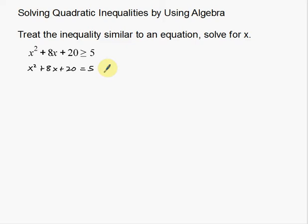Now I want to solve this like any normal equation. When solving quadratic equations, I want to get everything set equal to 0. So I subtract 5 over to get x squared plus 8x plus 15 equals 0. You always want everything on one side. There are a few ways to solve quadratic equations: factoring, completing the square, or the quadratic formula. Always try factoring first — it's much easier.